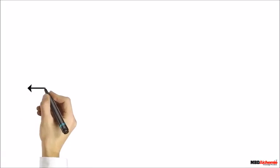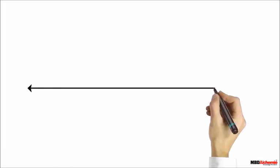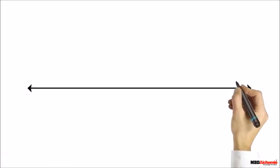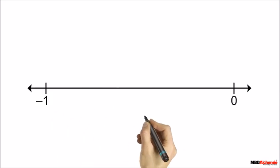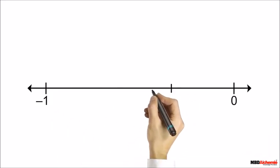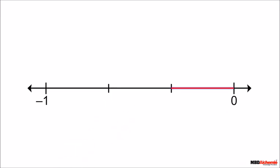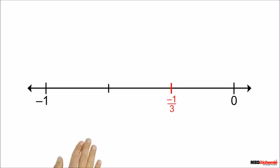Now consider the rational number minus 1 upon 3. To represent minus 1 upon 3 we have divided the length between 0 and minus 1 into 3 equal parts. The red mark represents minus 1 upon 3.